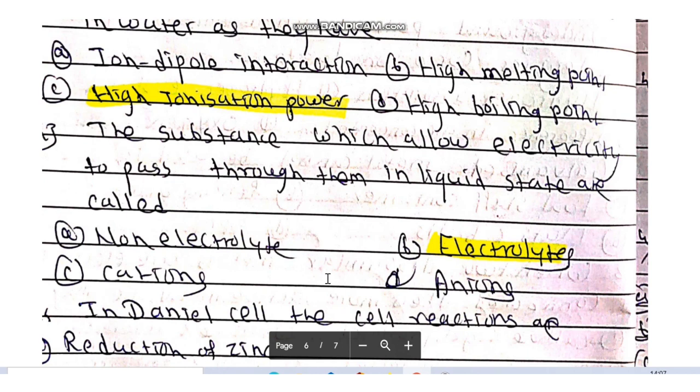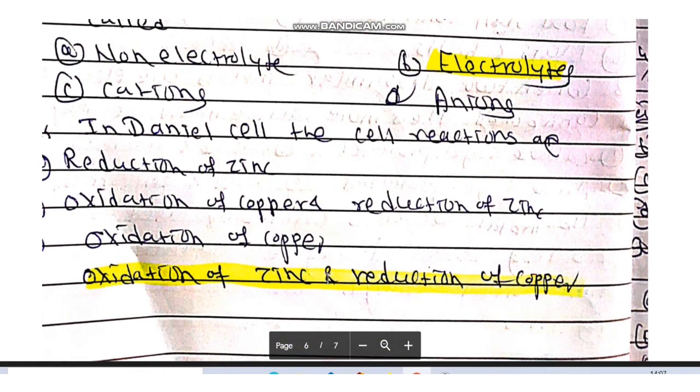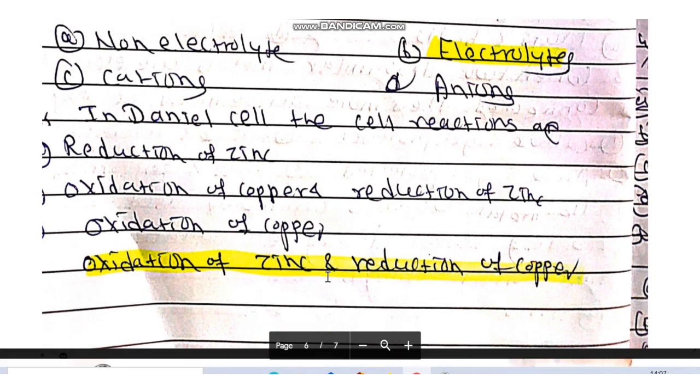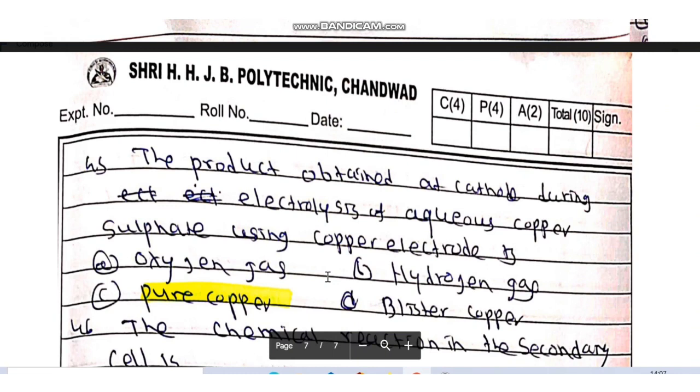The substances which allow electricity to pass through them in liquid state are called electrolytes. In Daniel cell, the cell reactions are oxidation at zinc and reduction at copper. The product obtained at cathode during electrolysis of aqueous copper sulfate solution using copper electrode is pure copper at cathode.